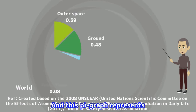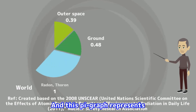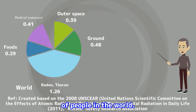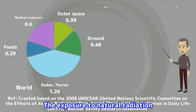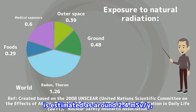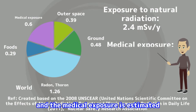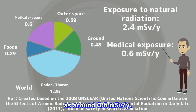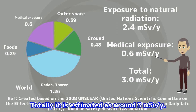And this pie graph represents the average exposure dose of people in the world. The exposure to natural radiation is estimated as around 2.4 millisievert per year, and the medical exposure is estimated as around 0.6 millisievert per year. Totally it is estimated as around 3 millisievert per year.